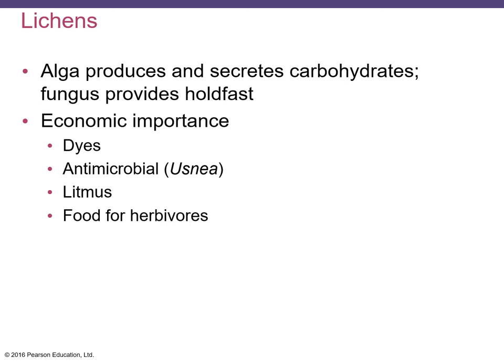Lichens are the major food for tundra herbivores such as caribou and reindeer. After the 1986 Chernobyl nuclear disaster in Ukraine, around 70,000 reindeer in Lapland that had been raised for food had to be destroyed because of high levels of radiation. The lichens on which the reindeer fed had absorbed radioactive cesium-137, which had spread through the air.